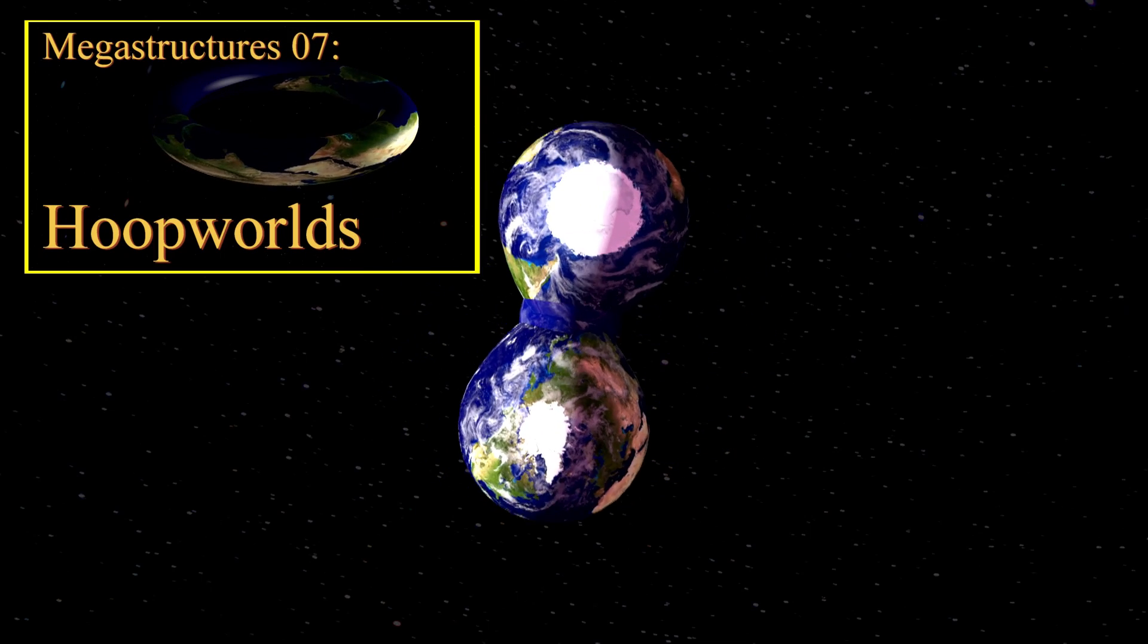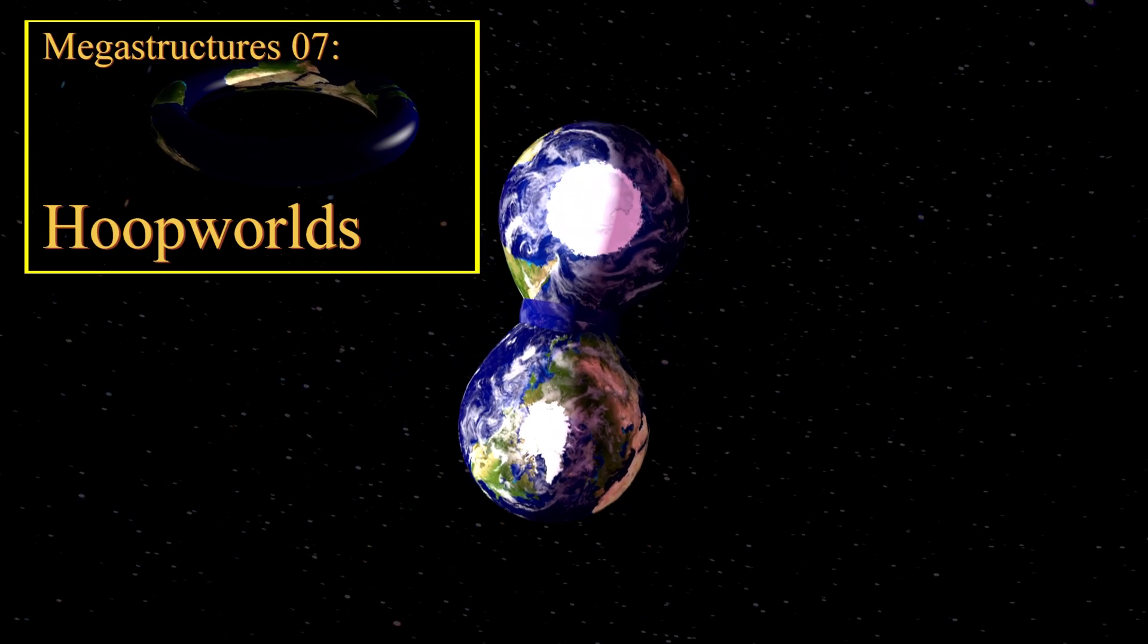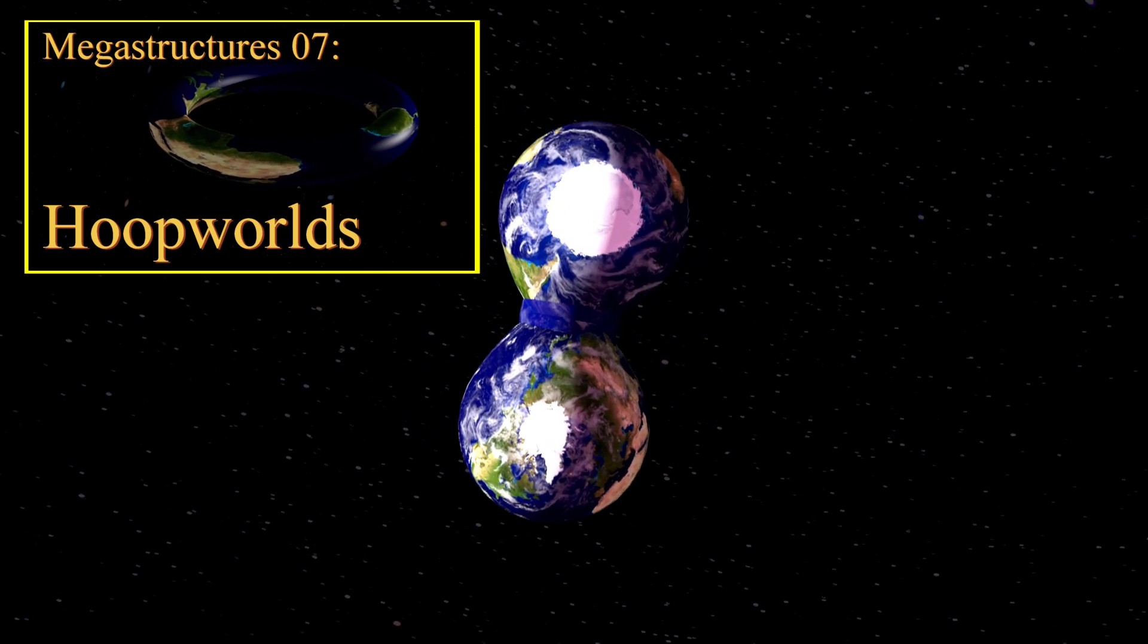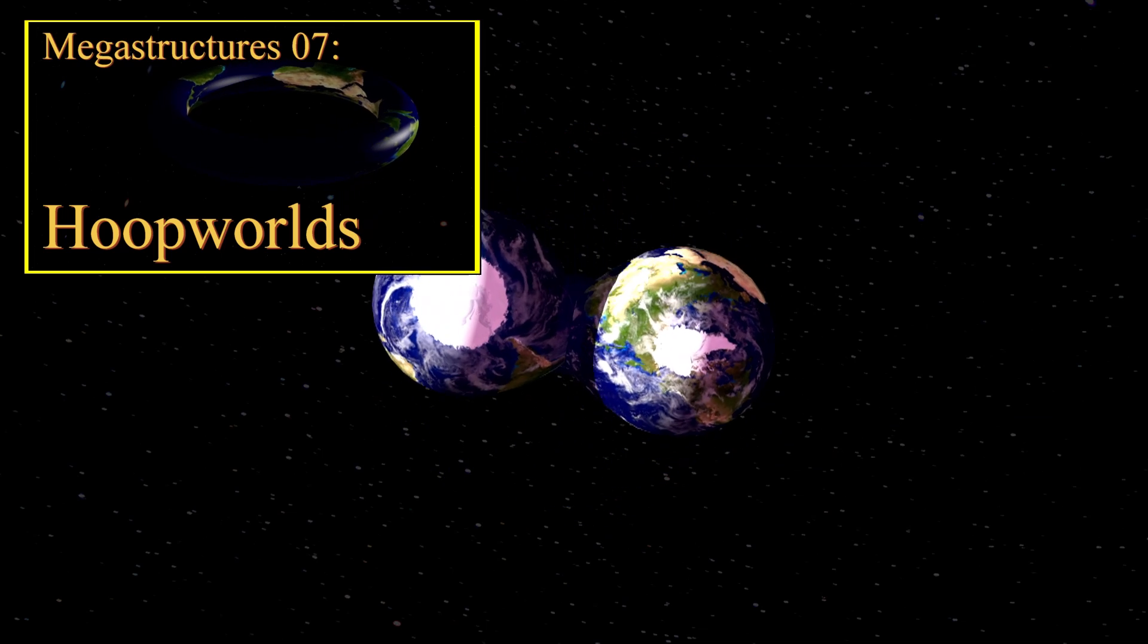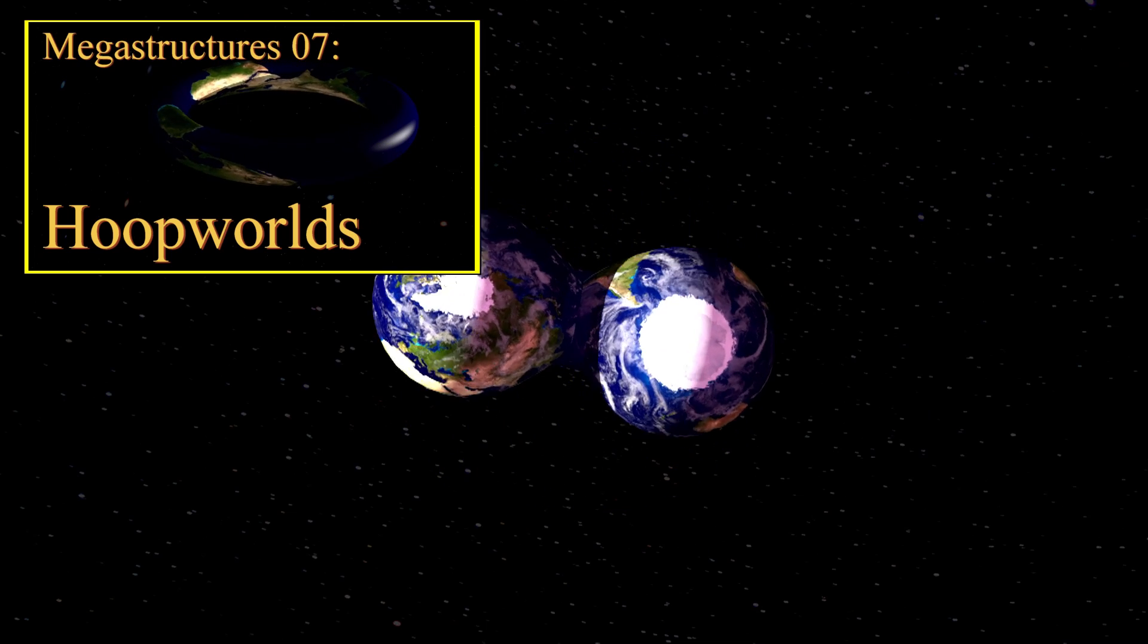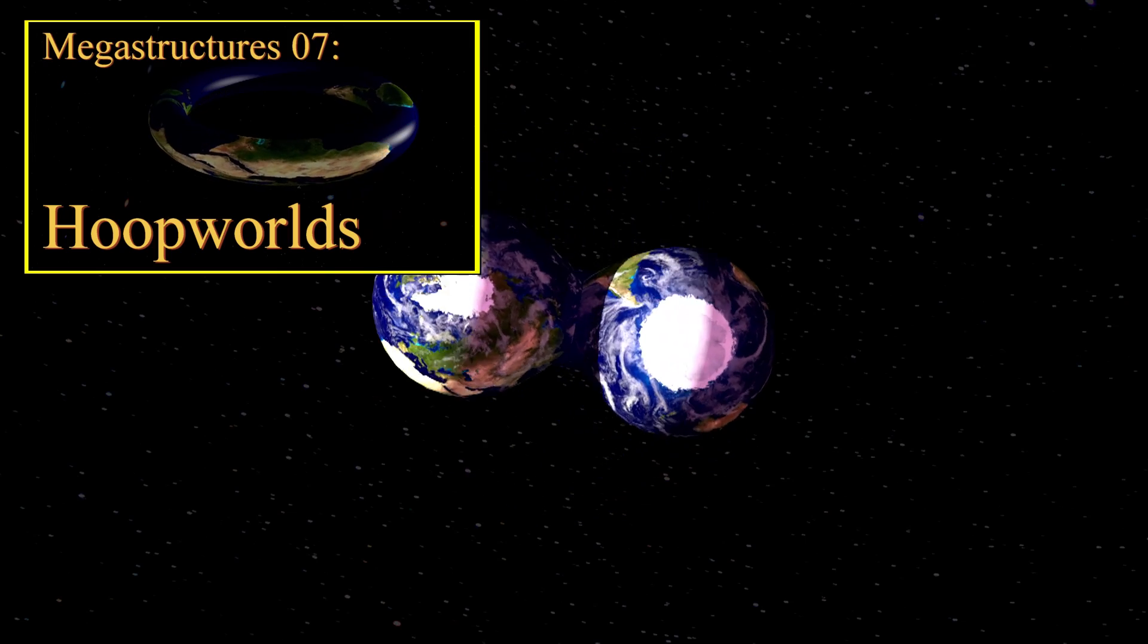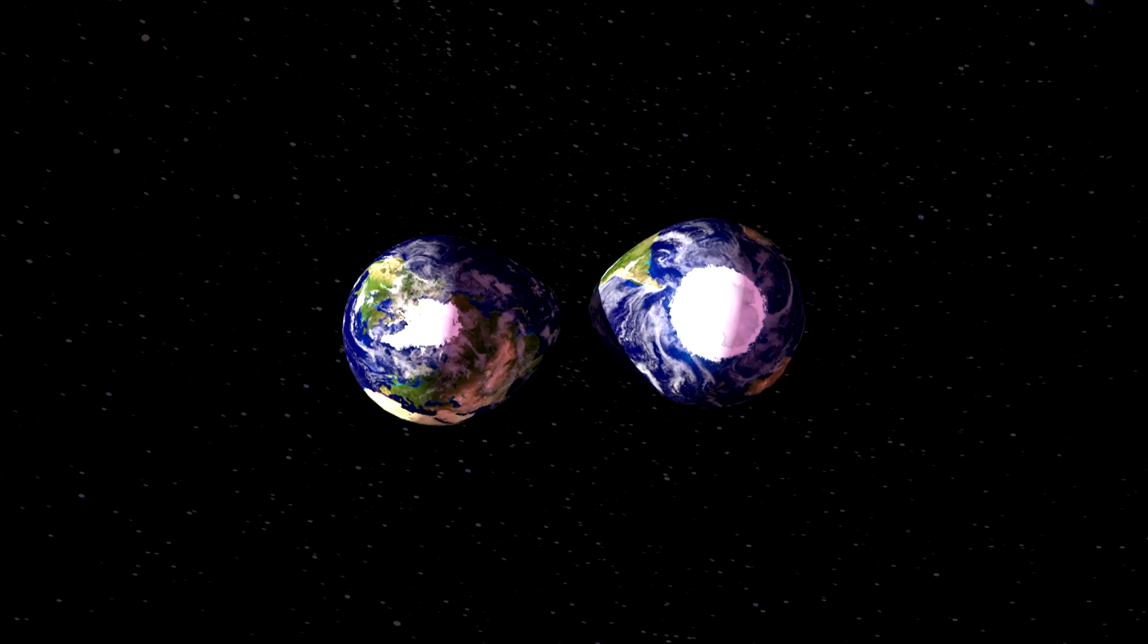This is also the sort of process that could give birth to a naturally occurring hoop world. We looked at the artificial variety recently in the Megastructure series. While very close double planets should eventually merge together, if this process was interrupted by a strike from a large rogue planetoid, similar to how our own Moon is thought to have formed, and a strike that added a lot of new angular momentum to the system, it could result in a torus-shaped planet. Neither a Roche world nor a torus world are terribly probable or stable items.